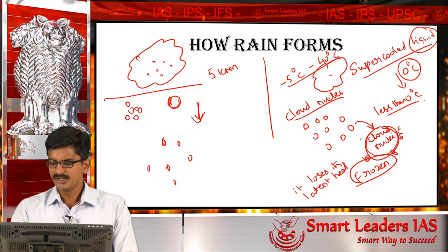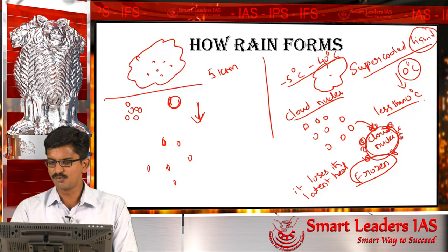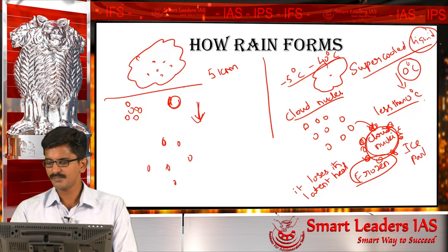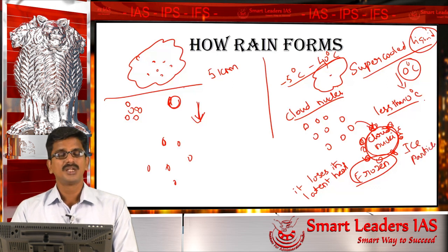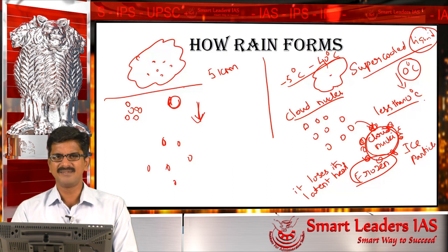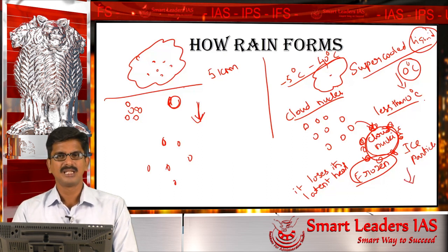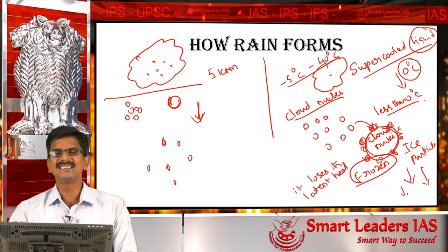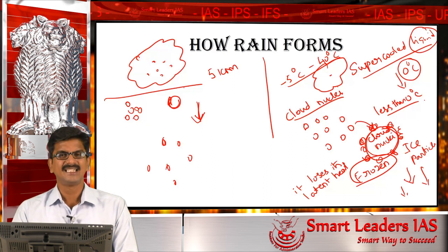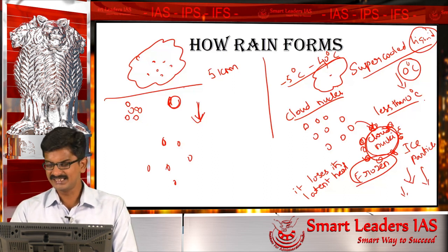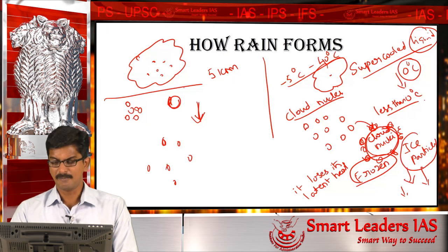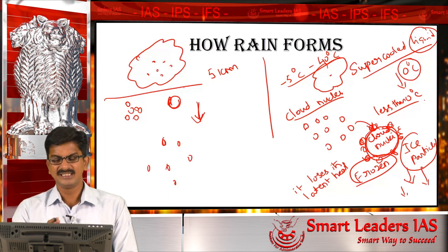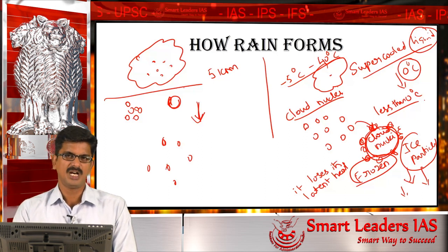Slowly, supercooled liquid comes and becomes frozen. Over a point of time, it becomes a heavier ice particle. This heavier ice particle, under the influence of gravity, comes down. But as it comes down, due to the increase in temperature, the ice melts — and this is the second reason for rain formation. So ice which formed upon a cloud nuclei, when it comes down, becomes rain. These are the two reasons how rain forms.